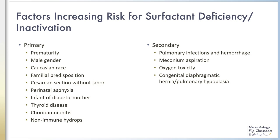Non-immune hydrops is another risk factor for RDS, as pleural effusions can interfere with surfactant production and may lead to inflammation. Additional RDS risk factors specifically related to secondary surfactant deficiency are pulmonary infections and hemorrhage, which may lead to inflammation or debris formation and inactivation of surfactant. The same is true for meconium aspiration syndrome and oxygen toxicity.